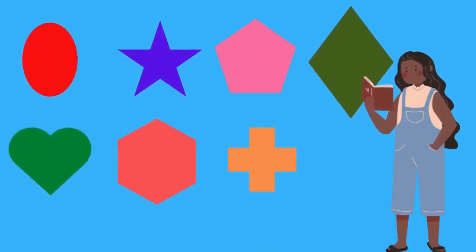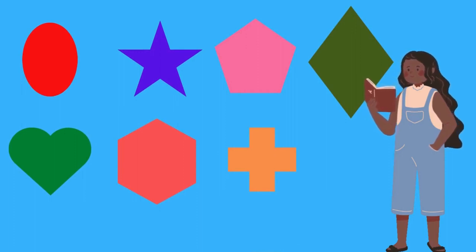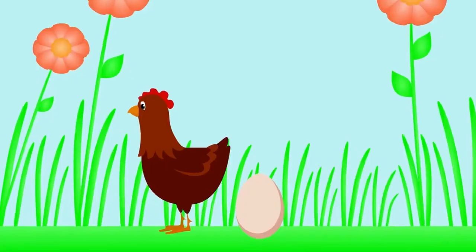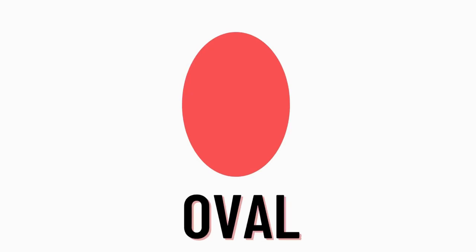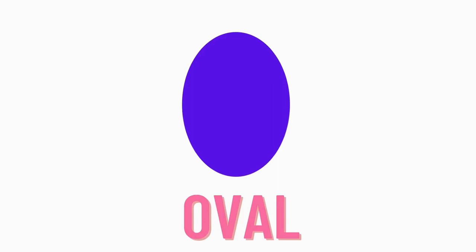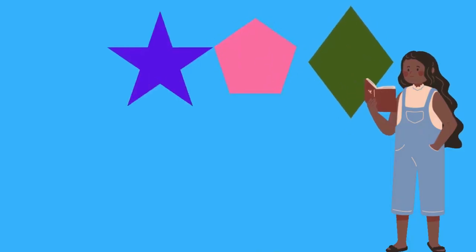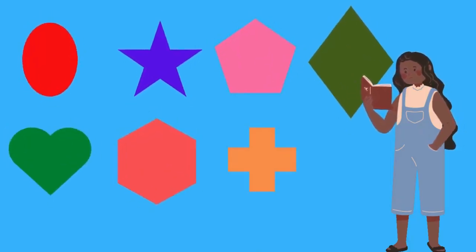Let's find the shapes! Are you ready kids? Do you know which shape is this? Hmm, this is oval! O-V-A-L, Oval. Let's find another shape!